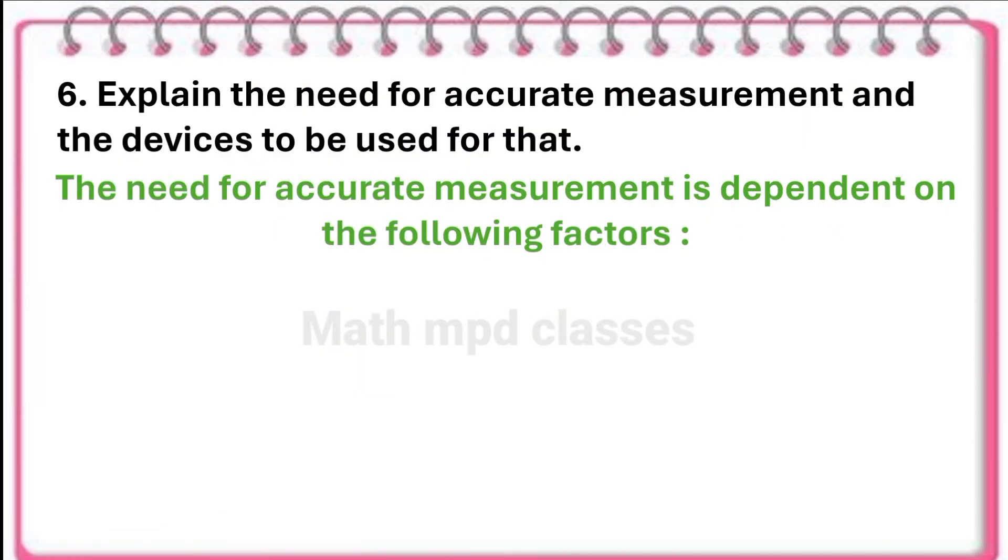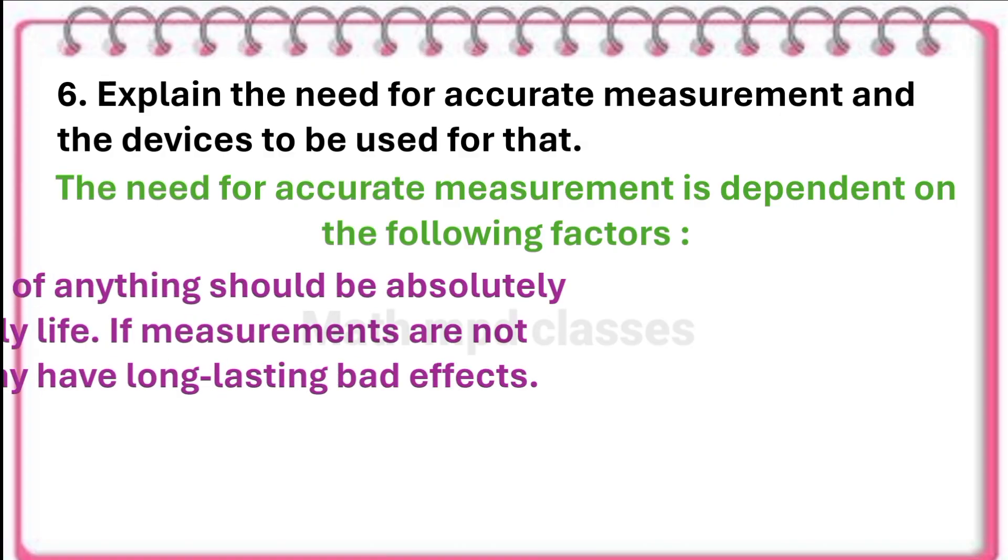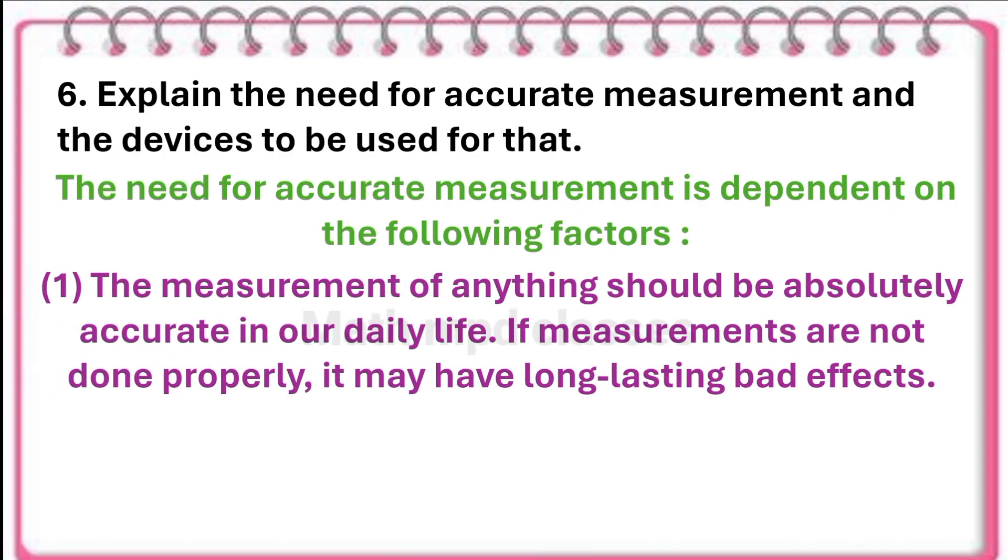Next question, question number six: explain the need for accurate measurement and the devices to be used for that. The need for accurate measurement is dependent on the following factors. The measurement of anything should be absolutely accurate in our daily life. If measurements are not done properly, it may have long-lasting bad effects.